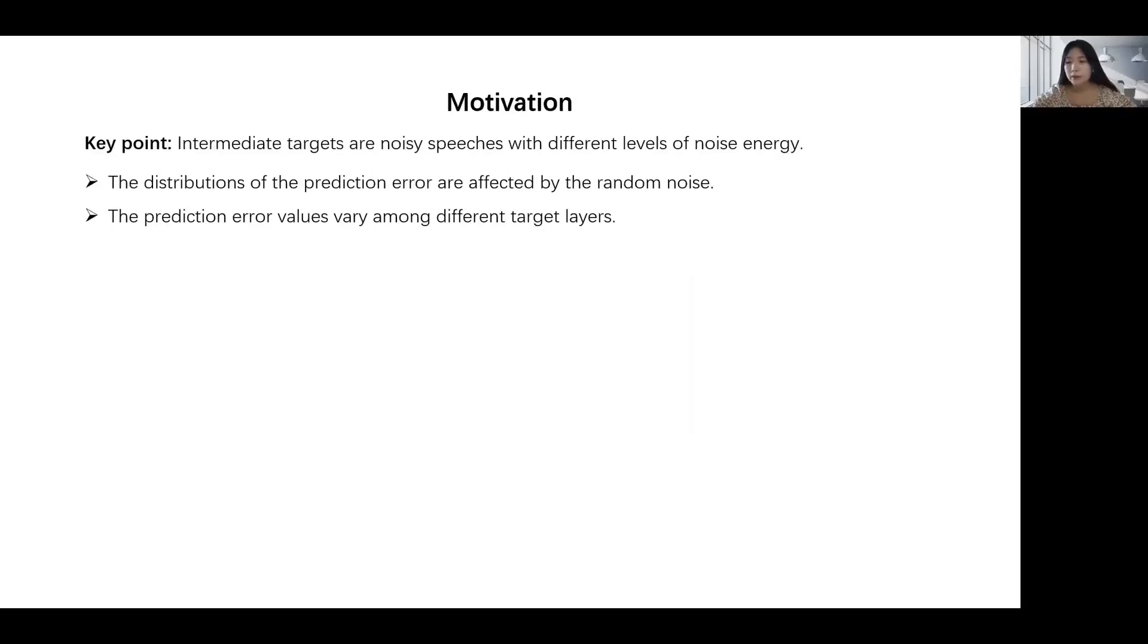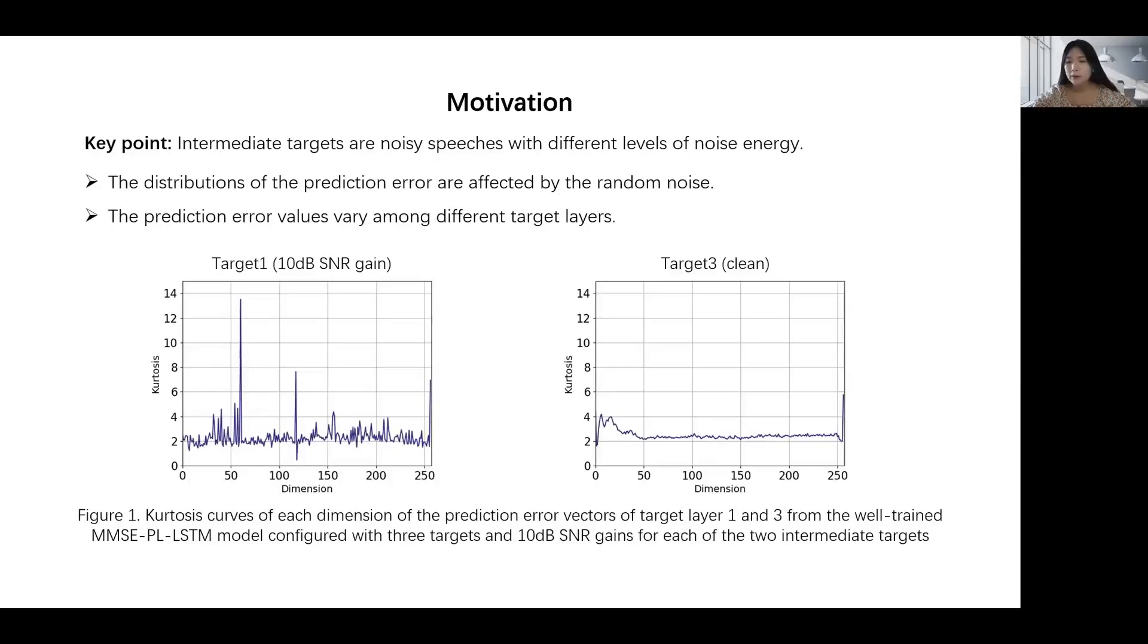In this example, the catarsis curves of the prediction error on target layer 1 and 3 also indicate this problem. Therefore, it is difficult to fully use prediction error values of different target layers when training the network.